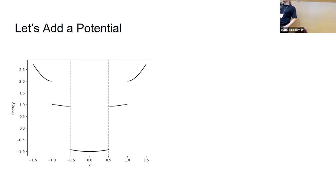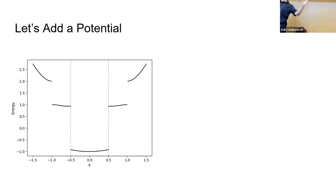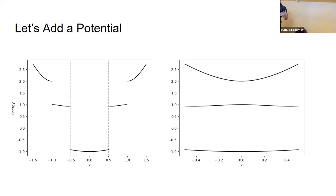If you take the pieces of the band structure outside the Brillouin zone and fold them back in between those boundary lines, you get these weird broken pieces joined together into distinct bands. This is where the name 'band structure' comes from — you get distinct bands of allowed energies.